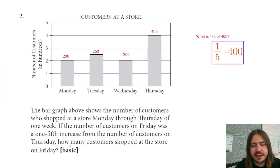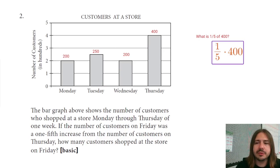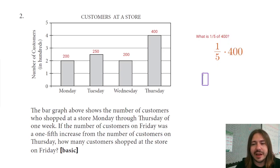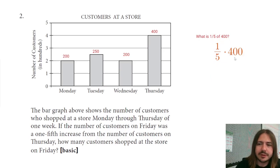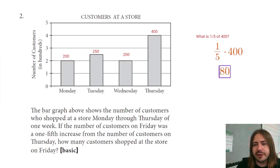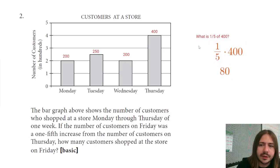This does say basic right here, so you will be allowed to use a four-function calculator. One fifth times 400 is the same thing as 400 divided by five. And so we're going to get 80. So 80 is one fifth of 400 — if I multiply this by five I should get 400.